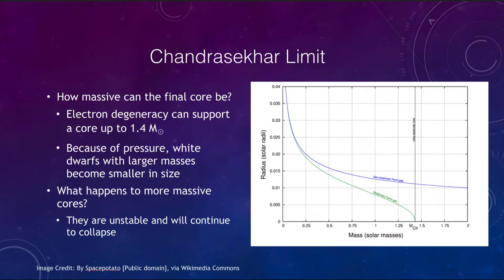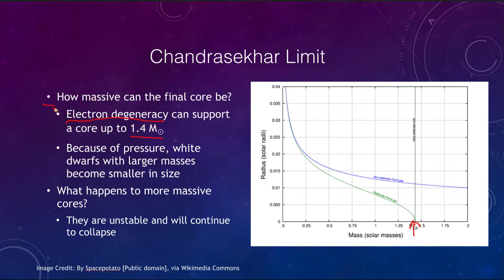Let's look at this limit, called the Chandrasekhar limit, which tells us how massive that final core can be. The electron pressure — those electrons pushing against each other as close as they can possibly be — does have a limit and can support a core up to 1.4 times the mass of the Sun. Anything larger than that, with more mass, is going to be able to crush in upon itself, overcoming that electron degeneracy and pushing those electrons into the nuclei.